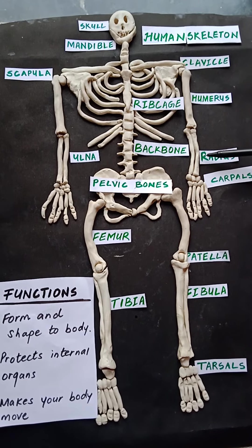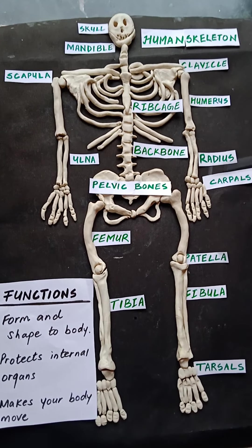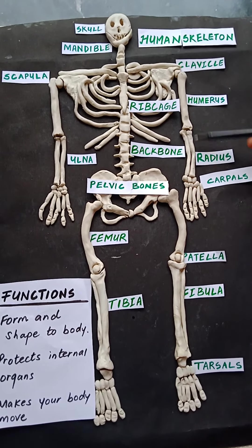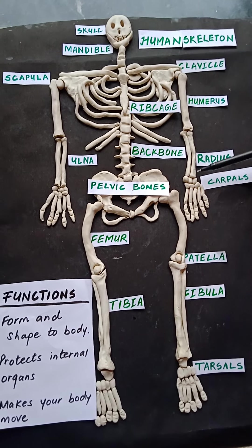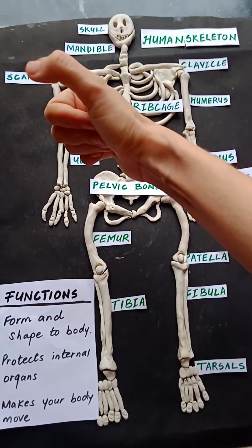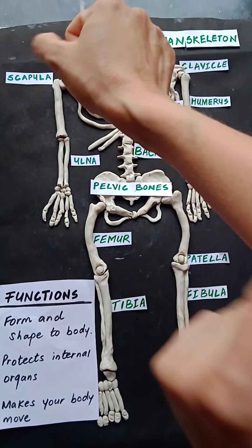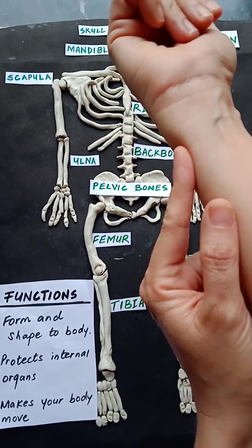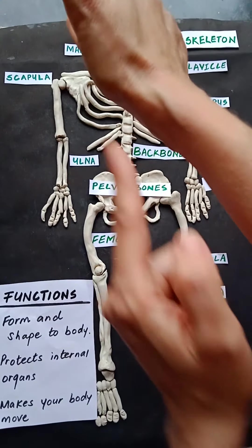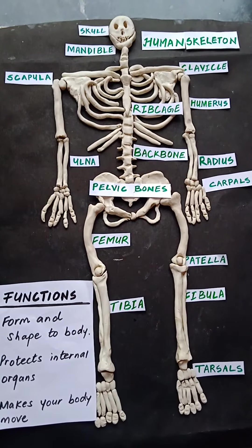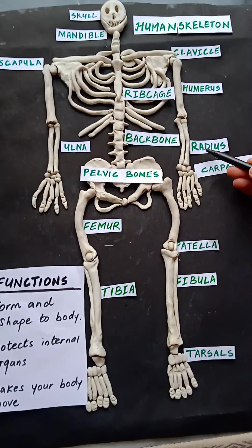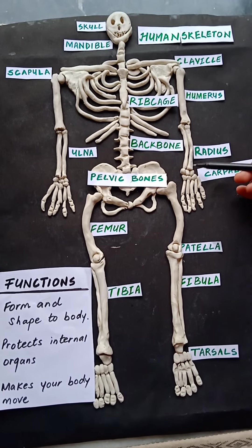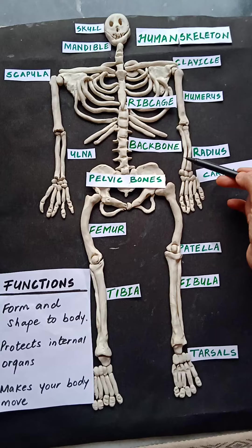Now let's move on to the next bones — radius and ulna. Near the thumb, the bone in your forearm is your radius bone. And under the radius is the ulna. To remember: R-A-T — radius is on the thumb side. The bone near the thumb is radius, and the other one is your ulna — ulna is under.